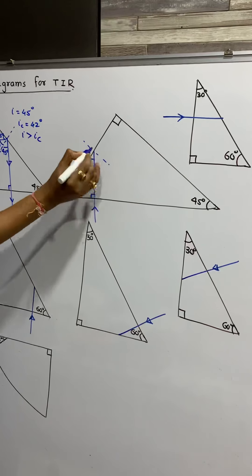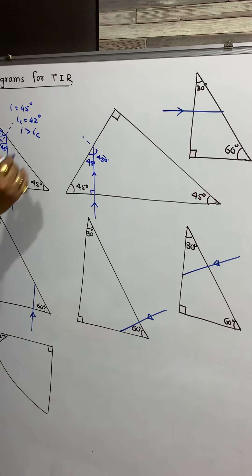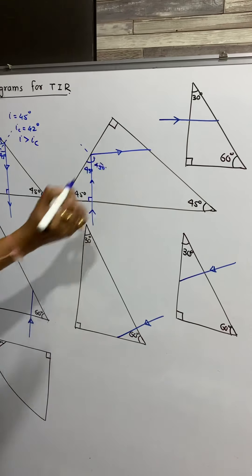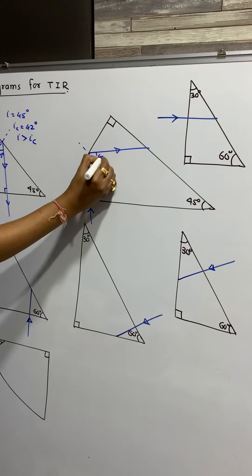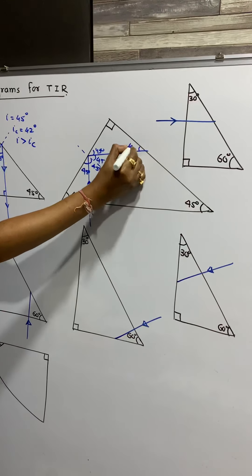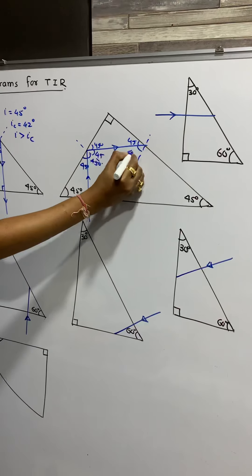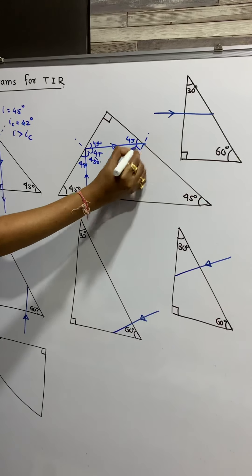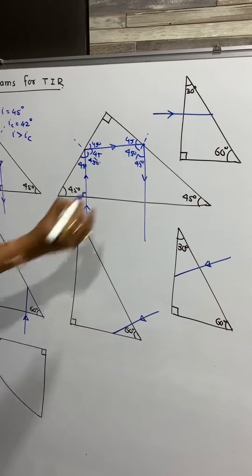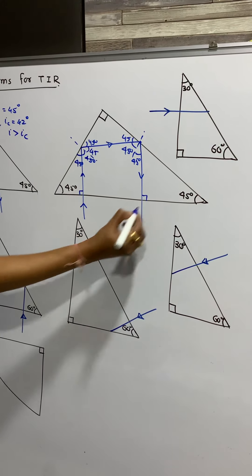I will draw the normal here. This angle of incidence is 45 degrees, which is more than the critical angle. It will get reflected back like this. Again this is 45 degrees, this is 45 degrees, this is 45 degrees. I will draw the normal here. This is again 45 degrees — it reflects back since the angle of incidence is more than the critical angle. This gives your 90-degree turn.